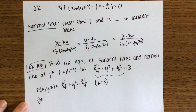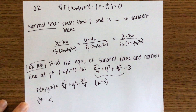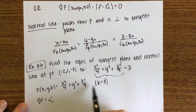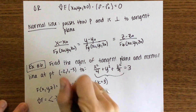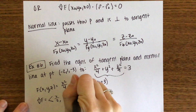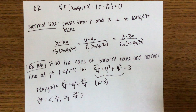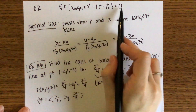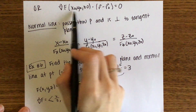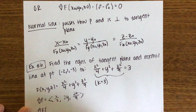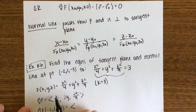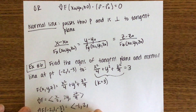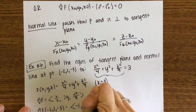Next we need the gradient of f. Taking partial derivatives with respect to x, y, and z gives: x/2, 2y, and 2z/9. Now evaluate the gradient at the point (−2, 1, −3): −2/2 = −1, 2(1) = 2, and −6/9 = −2/3. So the gradient at P is ⟨−1, 2, −2/3⟩.